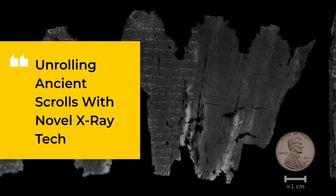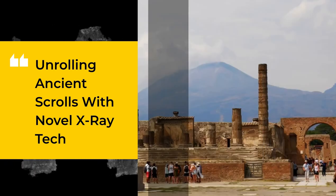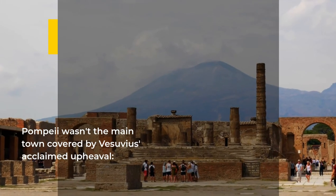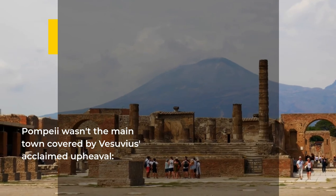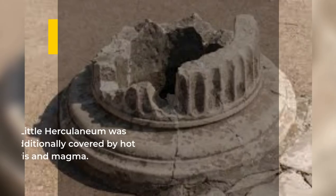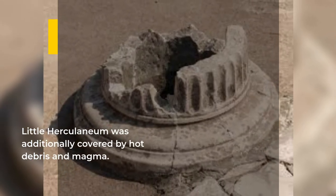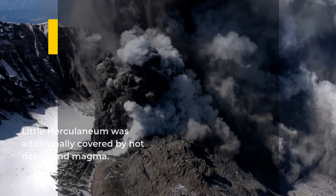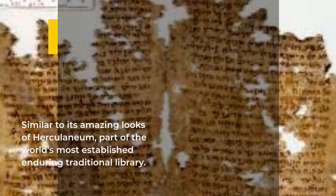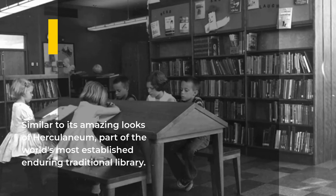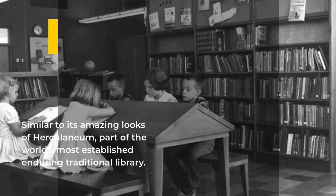1. Unrolling Ancient Scrolls with Novel X-Ray Tech. Pompeii wasn't the only town covered by Vesuvius' famous eruption. Little Herculaneum was also covered by hot ash and lava. Buried within its remains is part of the world's oldest surviving classical library. Shockingly, they were crisped by temperatures exceeding 260 degrees Celsius.